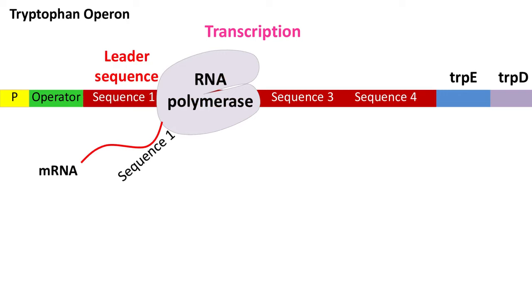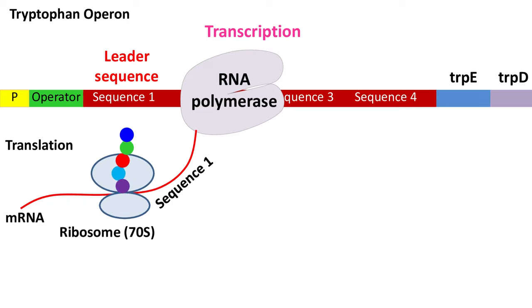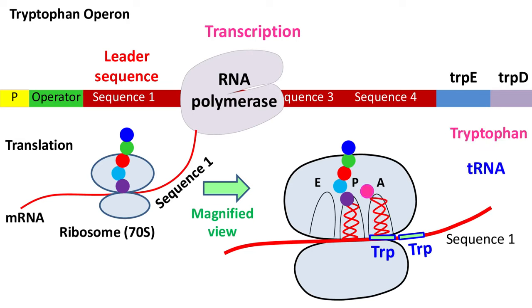Now remember, in prokaryotes, transcription and translation occur simultaneously. This means as the RNA polymerase transcribes sequence 1, the ribosome will start translating sequence 1 to form protein. Now, sequence 1 has two codons for tryptophan. This is where the tRNA carrying tryptophan will bind and tryptophan is incorporated into the peptide chain.